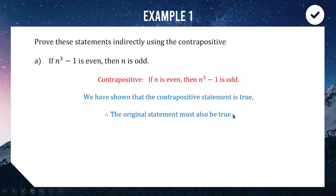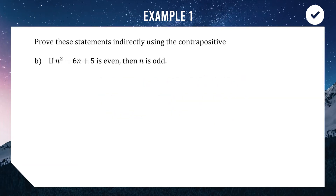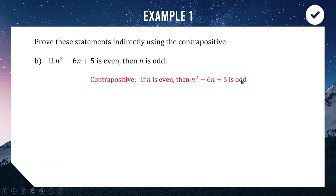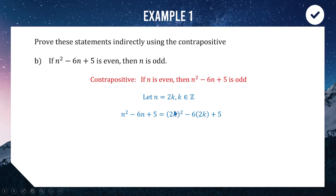Let's do the same thing with the next one: if n² − 6n + 5 is even, then n is odd. Once again the front half is the more complex part, so this is a good example of where we can flip the direction using the contrapositive. Our contrapositive statement is: if n is even, then n² − 6n + 5 is odd. We start with n = 2k, k an integer. We compute (2k)² − 6(2k) + 5, giving us 4k² − 12k + 5.